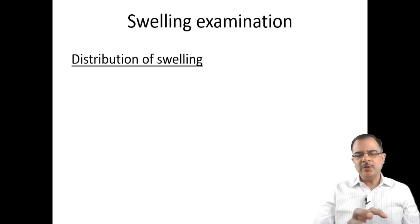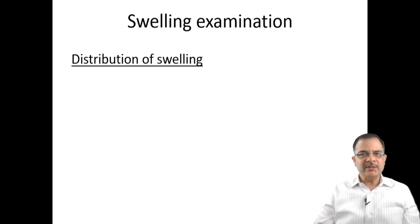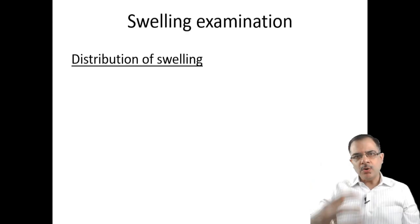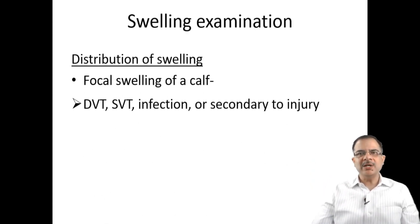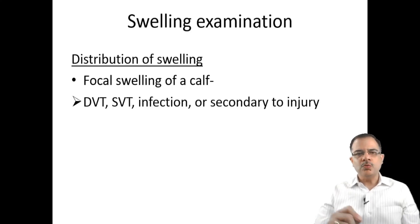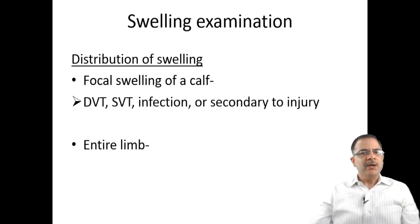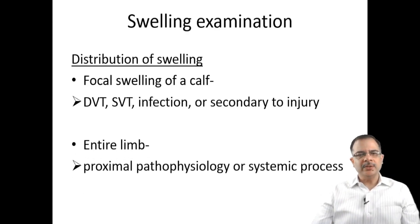For proper examination of the swelling, first assess whether it is unilateral or bilateral — the patient may report one limb but both may be affected on examination. Then look at the distribution: is it involving the whole limb or a focal part? Focal calf swelling points toward thrombosis, infection, superficial vein thrombophlebitis, or injury such as muscle rupture.